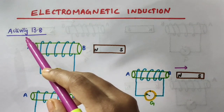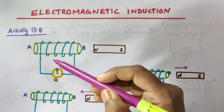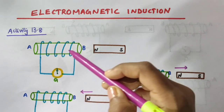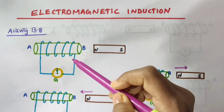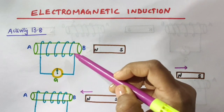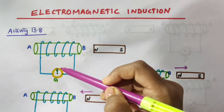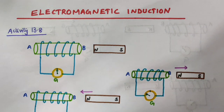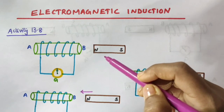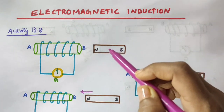First let us discuss about activity 13.8. For this activity we need a coil of wire — this blue colored one. The coil of wire AB has a large number of turns. The two ends of the coil are connected to a galvanometer as shown here. We also have a very strong bar magnet, and it is at rest — it is stationary.